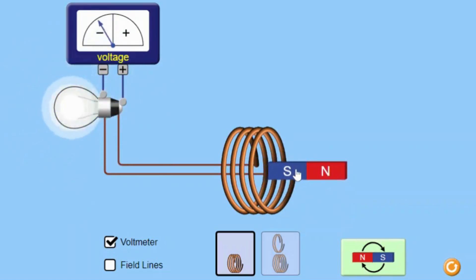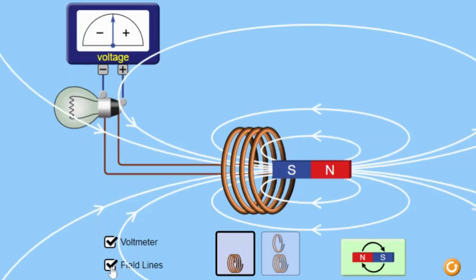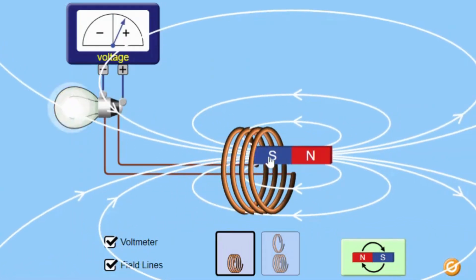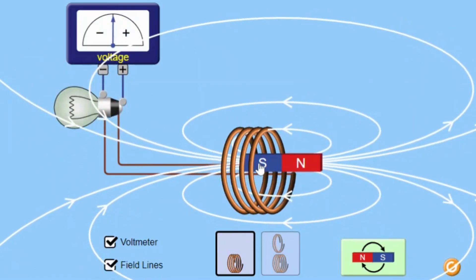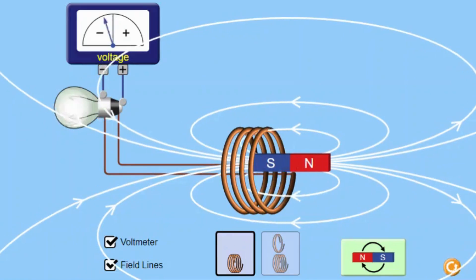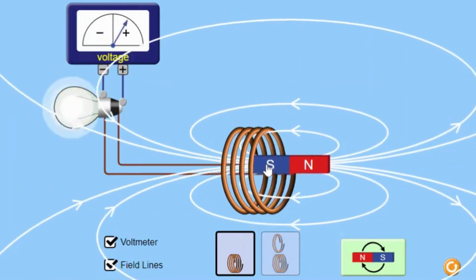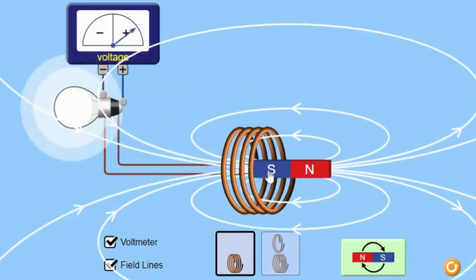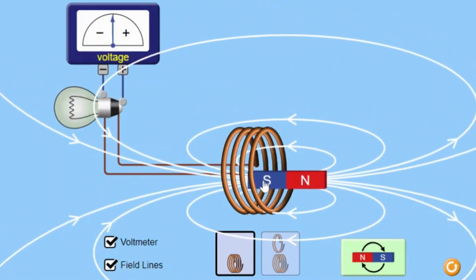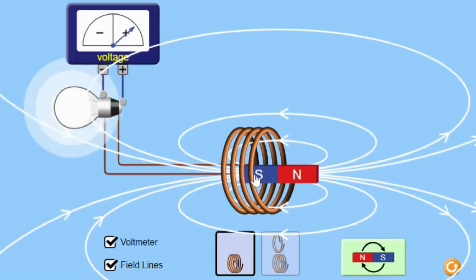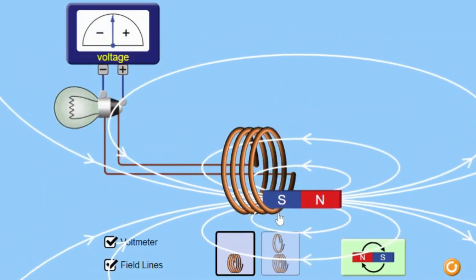The speed at which the magnet moves through the coil can be varied. The rate of change of magnetic flux is directly proportional to the speed of the magnet, affecting the induced EMF and, consequently, the brightness of the bulb. The brightness of the bulb serves as a visual indicator of the induced EMF.